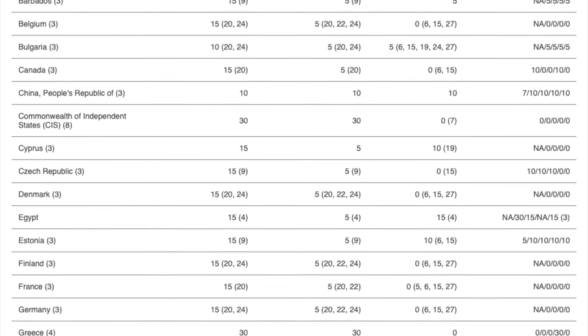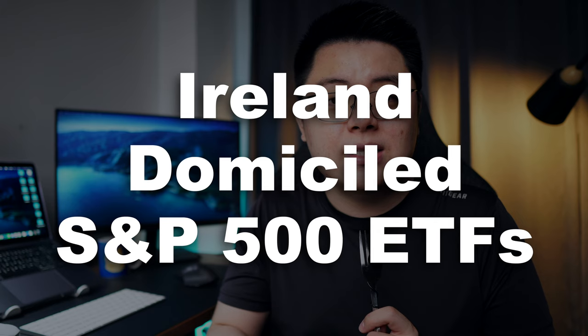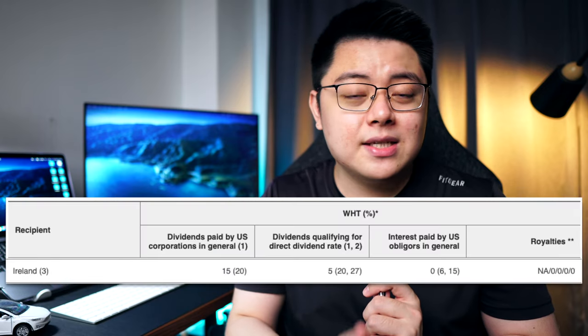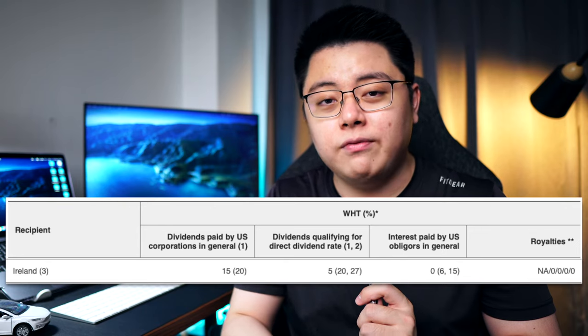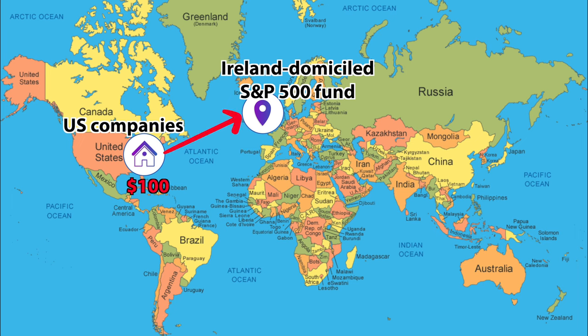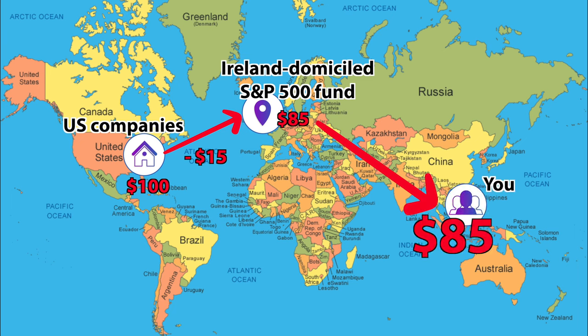However, if you are from a country that does not have a tax treaty with the United States — such as me, from Malaysia — then you can go around this by investing in Ireland domiciled S&P 500 ETFs. And surprisingly, they have very similar if not equal performance to their US counterparts. With Ireland domiciled ETFs, since they have a tax treaty with the United States, your dividends will only be effectively withheld by 15%. To illustrate: when US companies pay $100 of dividends, it is withheld by 15% before it reaches the Ireland fund. And for most of the world, since there is a double treaty agreement between your country and Ireland, you will be receiving $85 of dividends — effectively a 15% tax saving on your dividends.